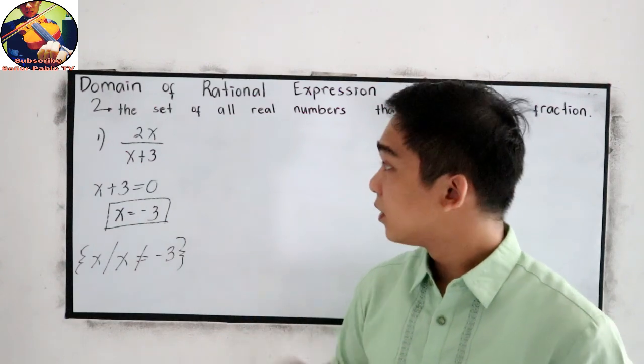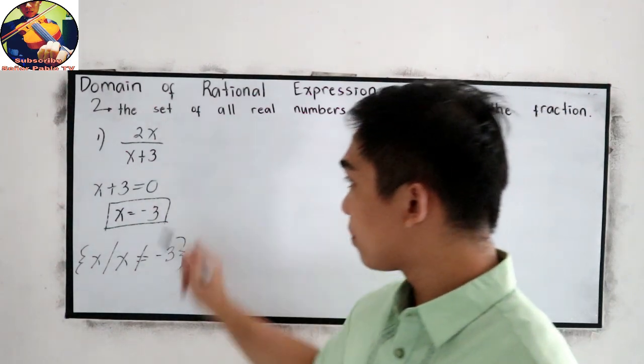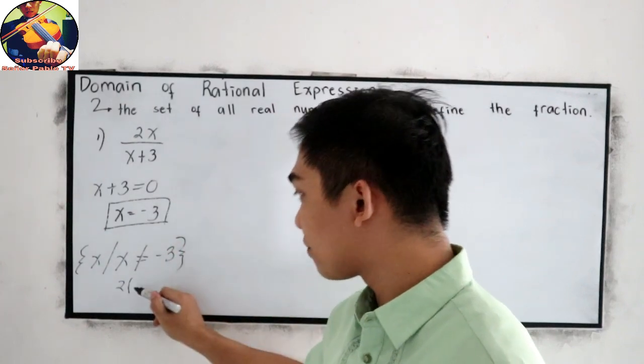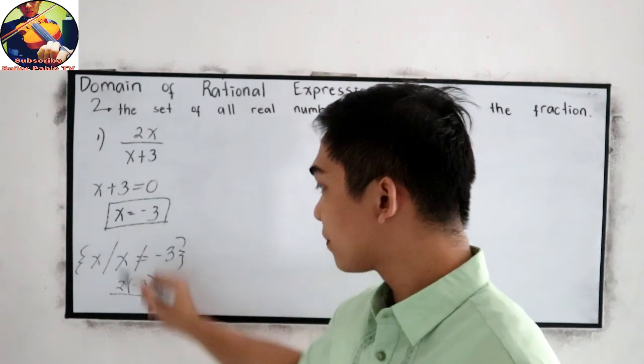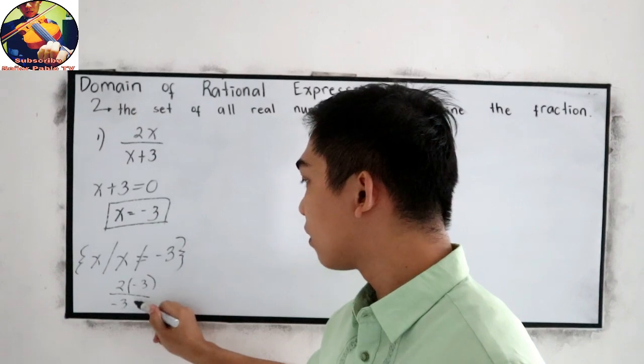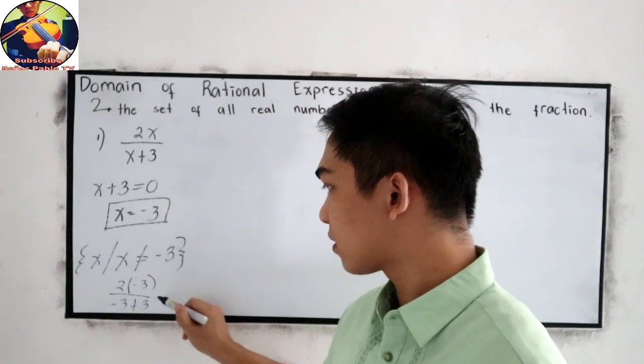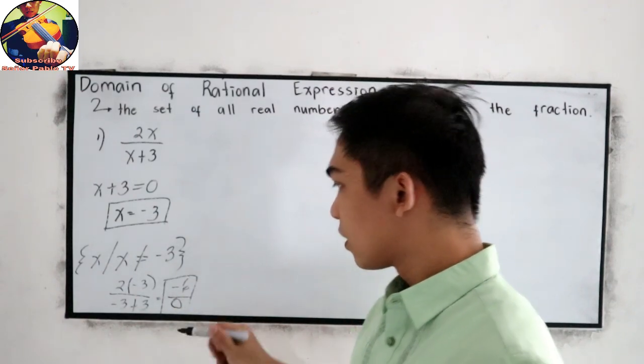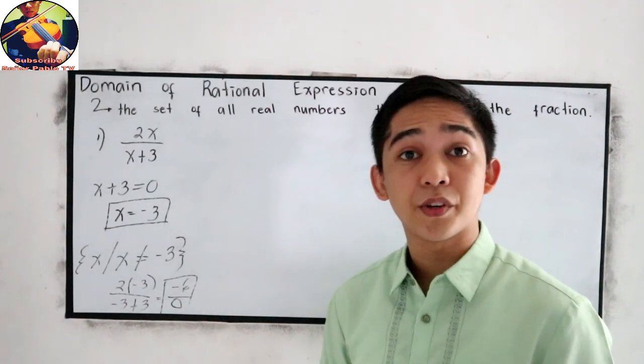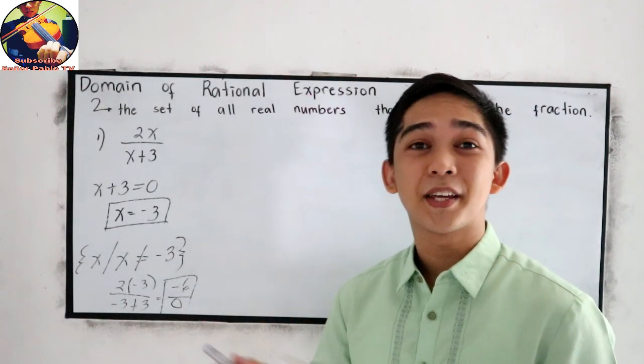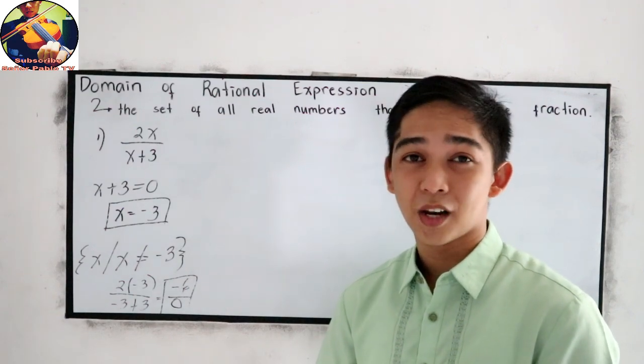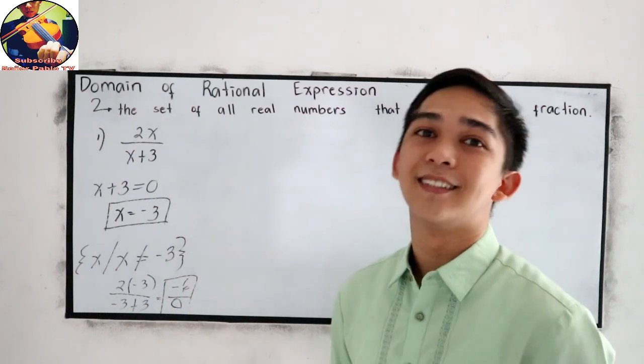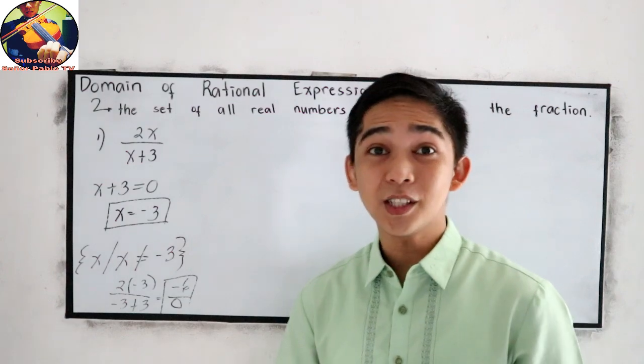Because if x is negative 3, that will make our expression undefined. So let us write the solve. It will become 2 times negative 3 over negative 3 plus 3. You substitute the value of x. So this will become negative 6 over 0. And if our denominator is 0, that will not define our rational expression. That will make our expression undefined.